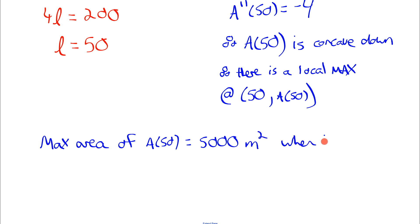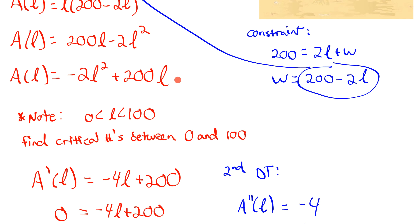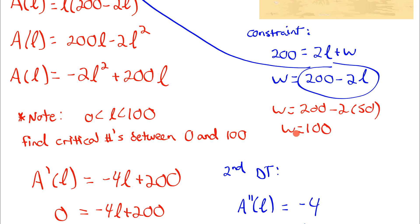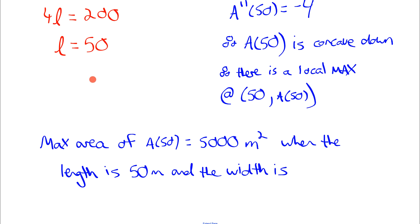To find the width, we plug the length of 50 into w equals 200 minus 2l, giving w equals 100 meters. So our rectangle is 50 meters by 50 meters by 100 meters — using all 200 meters of rope — and gives the maximum area of 5000 meters squared, with the width of 100 meters along the beach. That's our warm-up; we'll follow this same strategy for the next three optimization problems.